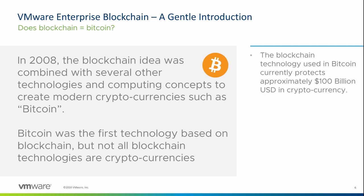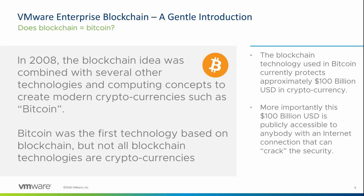The blockchain technology used in Bitcoin currently protects around 100 billion US dollars in cryptocurrency. More importantly, that 100 billion US dollars is publicly accessible on the internet and could theoretically be stolen by anybody with an internet connection if they could crack that security. But in 10 years, not one person has been able to crack it. So, with a 100 billion dollar prize in the public domain, nobody in 10 years has been able to crack it — you can be reasonably confident that the cryptography and the maths involved are robust.